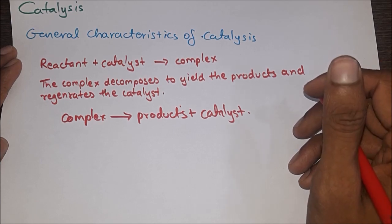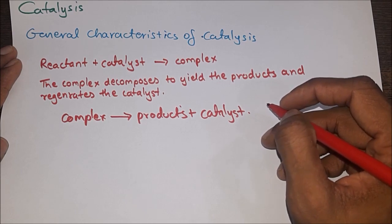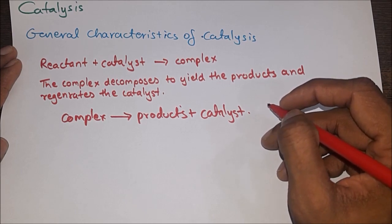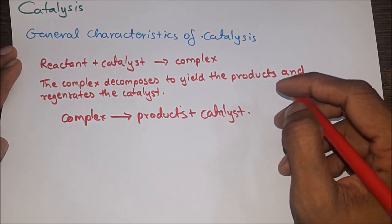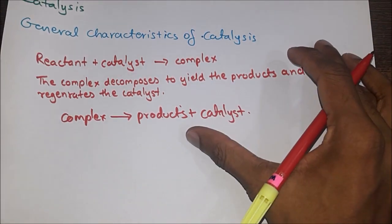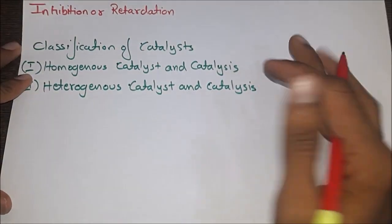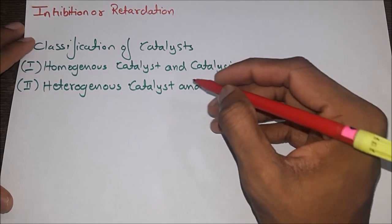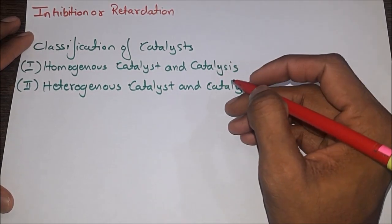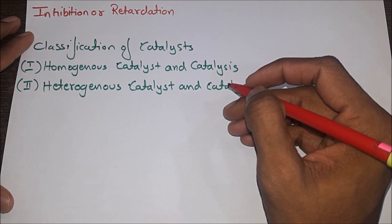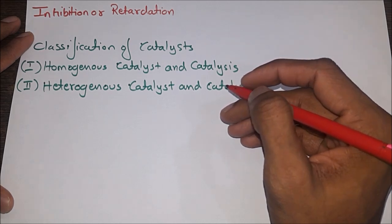Generally, a catalyst increases the rate of a reaction already in progress. It is therefore considered that the catalyst does not initiate the reaction; however, in certain cases the catalyst is found to initiate the reaction. Inhibition or retardation: A substance that decreases the rate of a chemical reaction is called an inhibitor. The phenomenon in which the rate of a chemical reaction is reduced by an inhibitor is called inhibition or retardation.